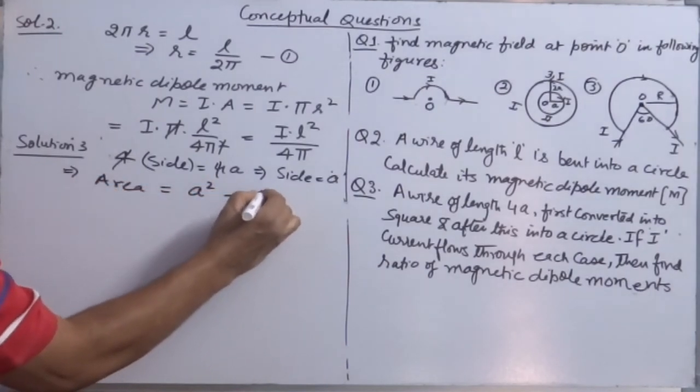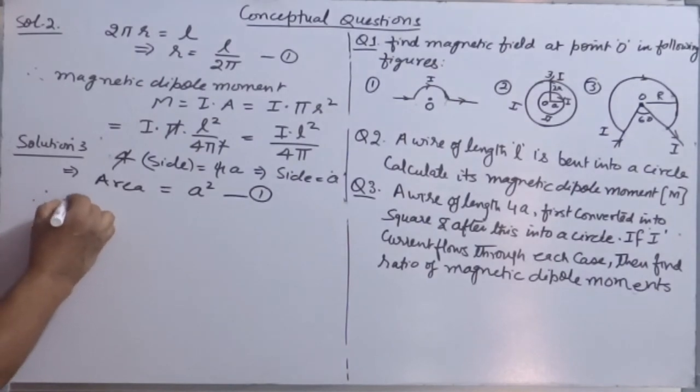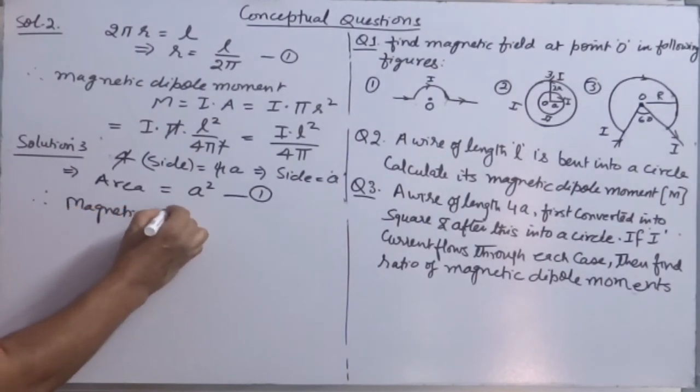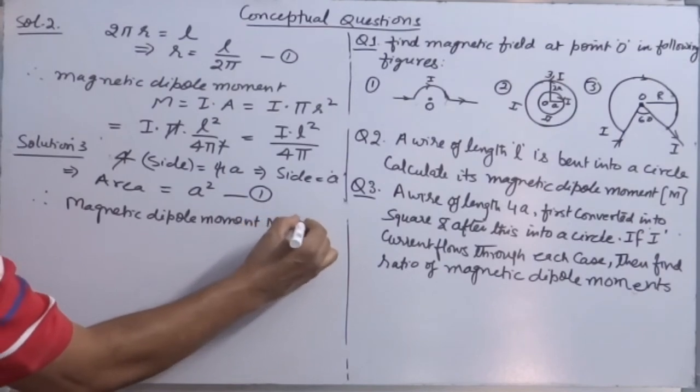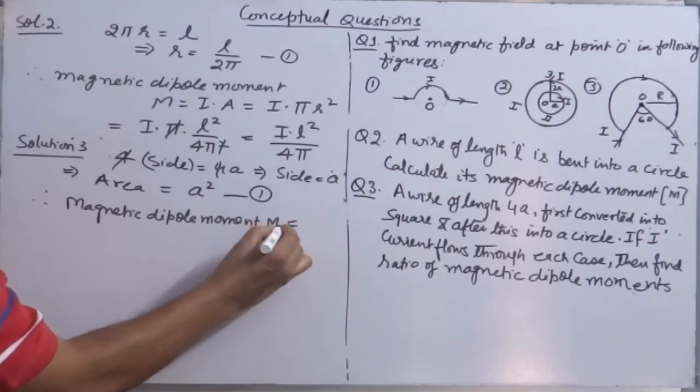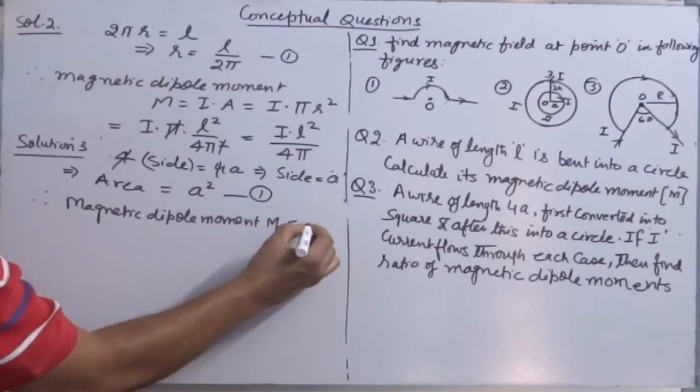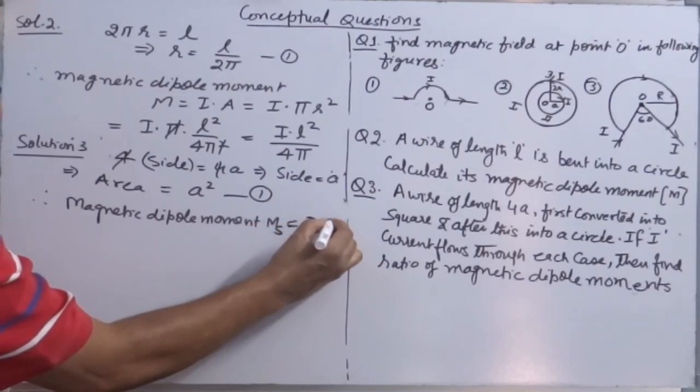Therefore, area of square = A². Therefore, magnetic dipole moment M_s (for square) = I × area = IA².